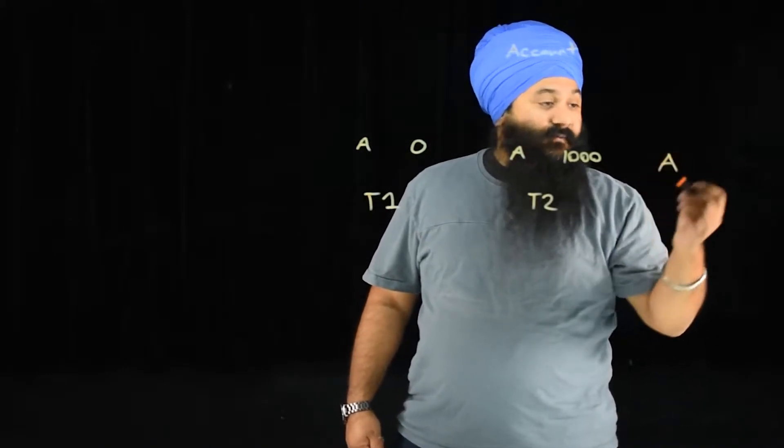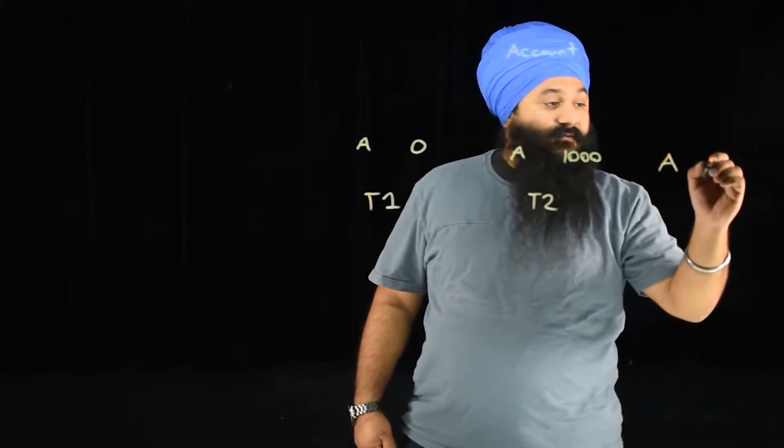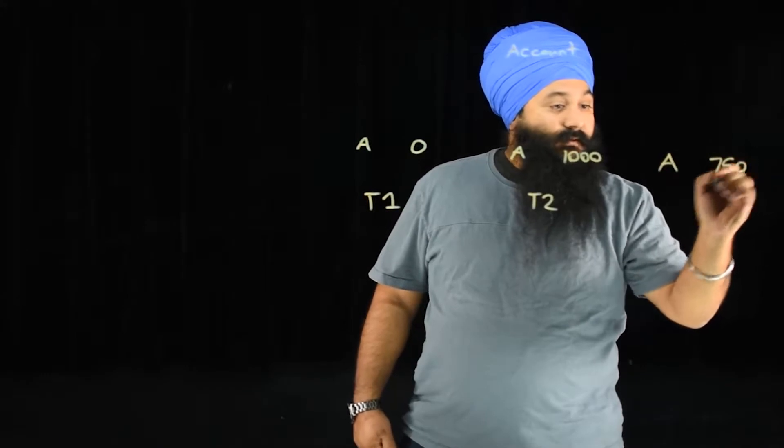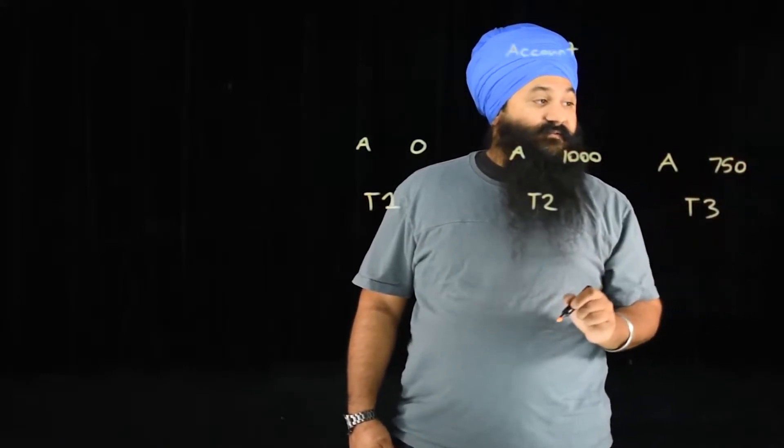But let's say we had to make a car payment of $250. So now our bank account at time three is $750.